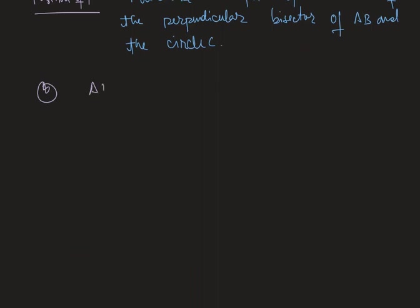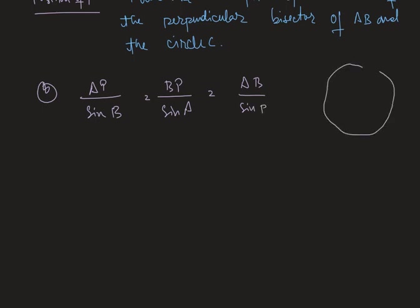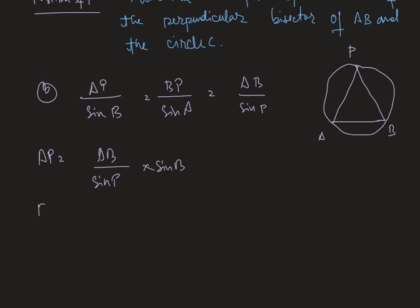Now in triangle PAB, by the sine rule: AP divided by sin B equals BP divided by sin A equals AB divided by sin P. Therefore AP equals AB divided by sin P multiplied by sin B, and BP equals AB divided by sin P multiplied by sin A.